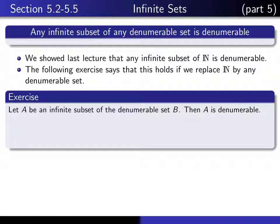Here's the statement: if A is any infinite subset of a denumerable set, then A is itself denumerable. So this one here that we proved in the last lecture is just a special case of this theorem where B is equal to N.